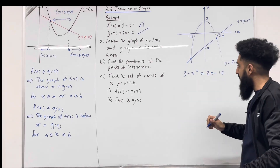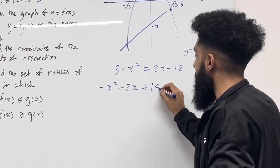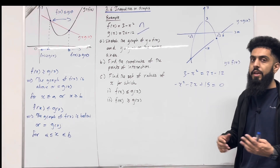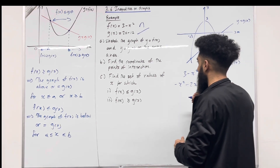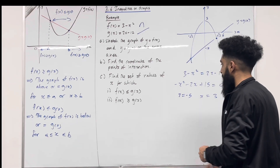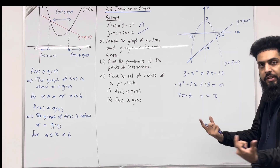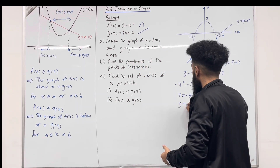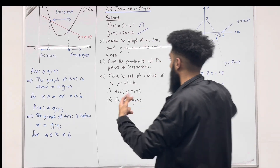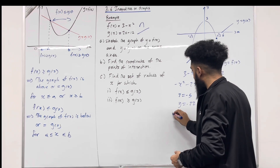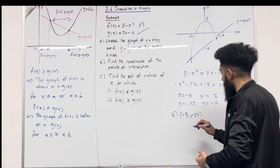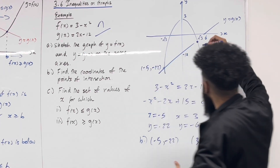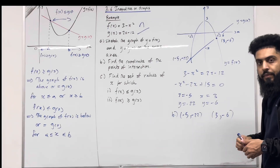Taking everything to the left-hand side, I get -x² - 2x + 15 = 0. We can solve this quadratic equation by factorising, completing the square, or using the quadratic formula. Solving gives x = -5 and x = 3. Substituting x = -5 into one of the functions gives y = -22, and substituting x = 3 gives y = -6. So the points of intersection are (-5, -22) and (3, -6), which I can label on the graph.